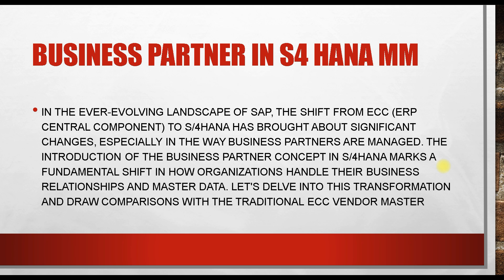In the ECC version (ERP Central Component), on the purchasing side we used the vendor master, and on the sales side we used the customer master. In S4 HANA, these are combined — both the vendor master and customer master are now called the business partner.